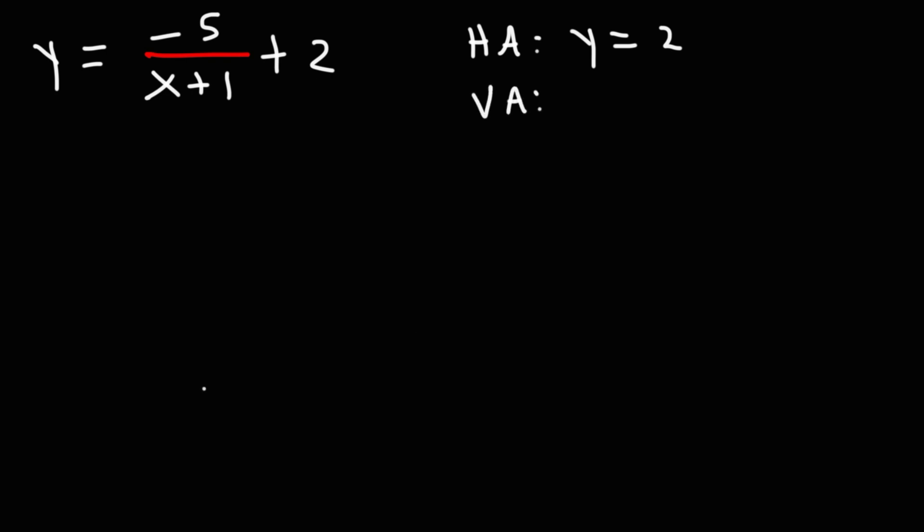To find the horizontal asymptote, we know it's y equals k, and k is 2 in this example.